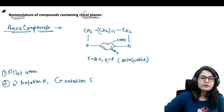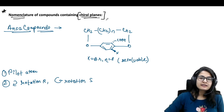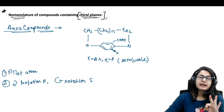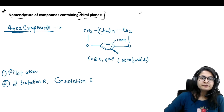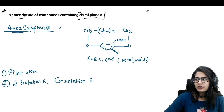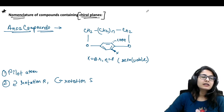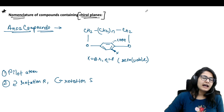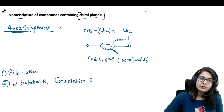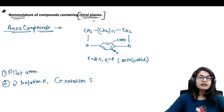First of all, chiral molecules are classified under three categories as you already know. The first one is having a tetrahedral carbon like an asymmetric carbon. The second one is having a chiral axis like allenes and spiro compounds. The third one is having a chiral plane.